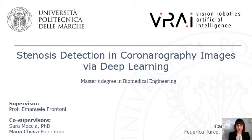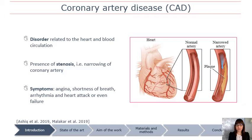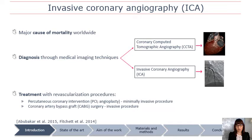This is my work on stenosis detection in coronarography images via deep learning. Coronary artery disease is one of the most common types of cardiovascular diseases, involving the presence of stenosis — that is, the constriction of at least one of the large coronary arteries that supply oxygenated blood to the heart. This disease is one of the leading causes of mortality worldwide, and the assessment of its presence and severity is critical for determining appropriate clinical management.